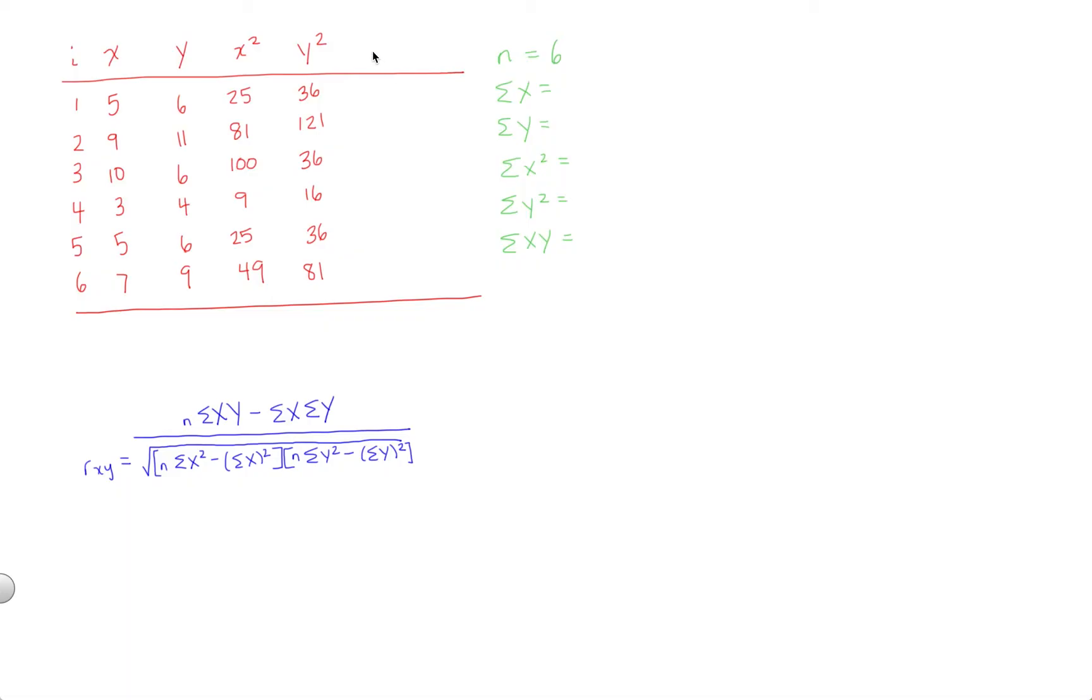So the last thing we need is our x times y products, and this is pretty easy to get as well. We're just going to take each x value and multiply it by the corresponding y value. So 5 times 6 equals 30. 9 times 11 is 99. 10 times 6 is 60. 3 times 4 is 12. 5 times 6 is again 30, and we're almost there. 7 times 9 is 63.